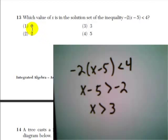And when we take a look at the answer choices, 0 is not greater than 3, 2 is not greater than 3, 3 is not greater than 3. Remember, this is a strictly greater than sign. So the only answer choice that works is number 4.